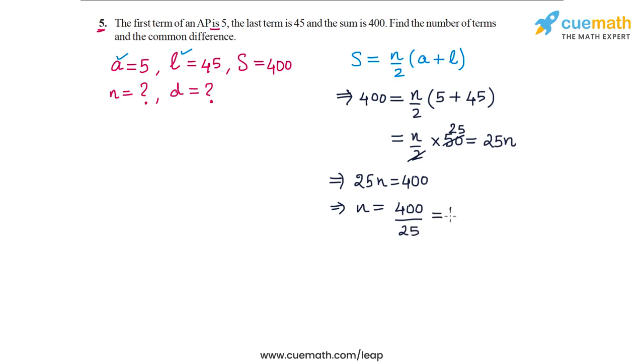This means that N is equal to 400 by 25, that's equal to 16. So N is equal to 16. That means the number of terms in the AP is equal to 16.